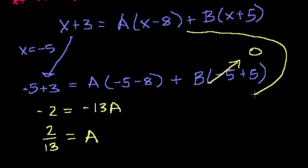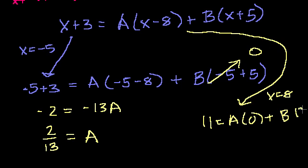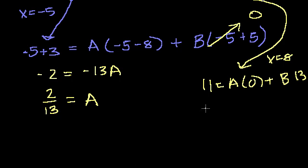And now we can do the same thing up here and get rid of the a terms by making x is equal to 8. If x is equal to 8, you get x plus 3 is equal to 11, is equal to a times 0, plus b times 8 plus 5, plus b times 13. And then you get 11 is equal to 13b. Divide both sides by 13. You get b is equal to 11 over 13. So we were able to solve for our a's and our b's.